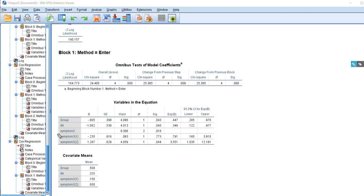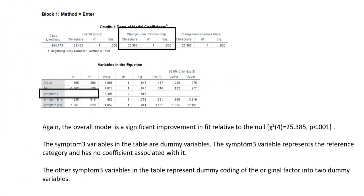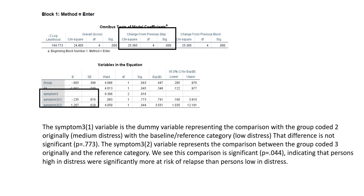The output now incorporates dummy variables. Symptom3 appears without a coefficient, but we have Symptom3(1) and Symptom3(2), which are dummy variables reflecting differences between a given category and the baseline reference category. The overall model is again a significant improvement in fit relative to the null model. Symptom3(1) represents the comparison between the medium distress group and the low distress reference group — that difference is not significant. Symptom3(2) represents the high distress group versus the reference category, and that comparison is significant, indicating persons higher in distress were significantly more at risk of relapse.